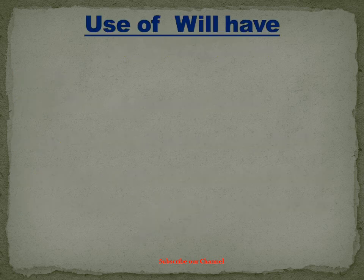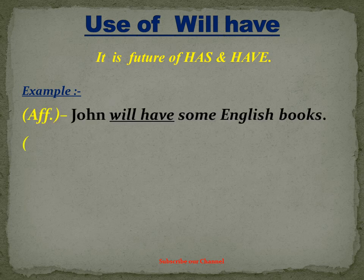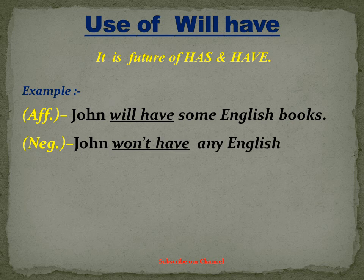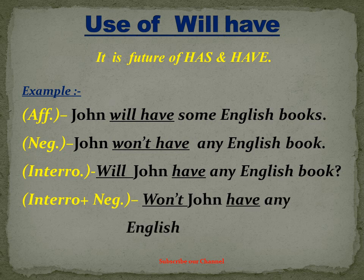Last use है हमारे पास will have का — will have हमारा future होता है has और have का। Affirmative: John will have some English books. Negative: John won't have any English books — won't, will not का short form है। Interrogative: Will John have any English books? Interrogative plus negative: Won't John have any English books?